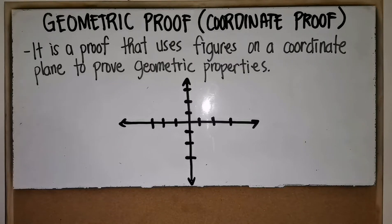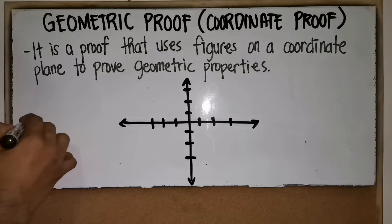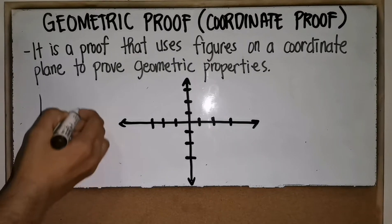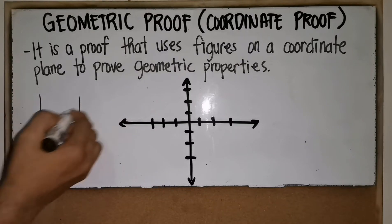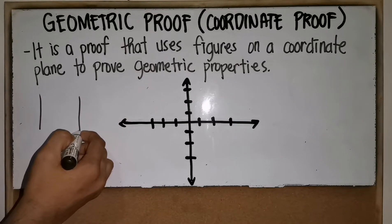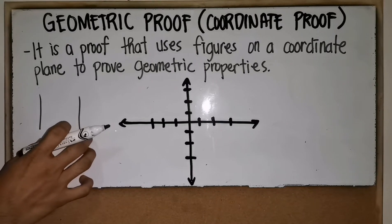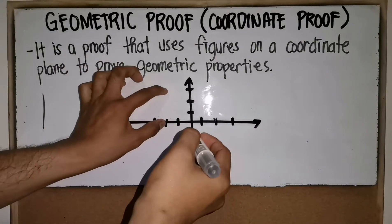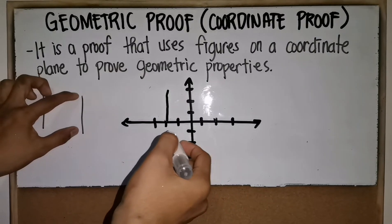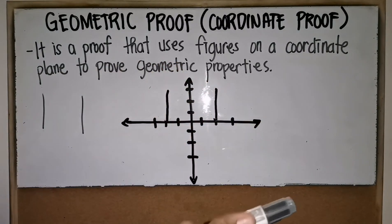Next is geometric proof or coordinate proof. It is a proof that uses figures on a coordinate plane to prove geometric properties. For example, if you want to show that one line is equal to another, you place those figures in the coordinate plane and then use formulas to prove the property.